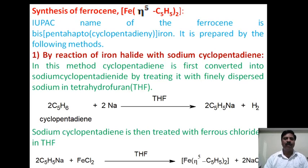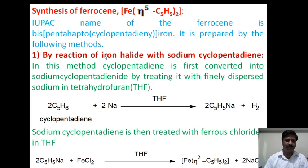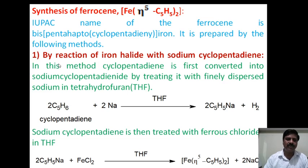Now moving to ferrocene. The IUPAC name of ferrocene is bis(pentahapto-cyclopentadienyl)iron. For the syllabus, one method of preparation is sufficient, but I will discuss three methods for preparation of ferrocene.